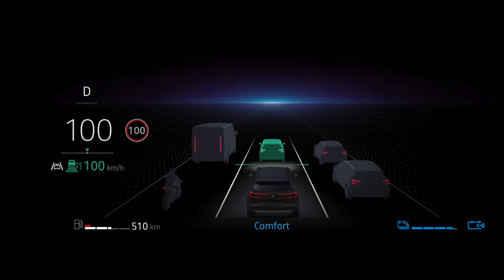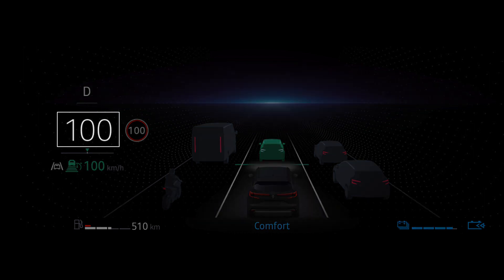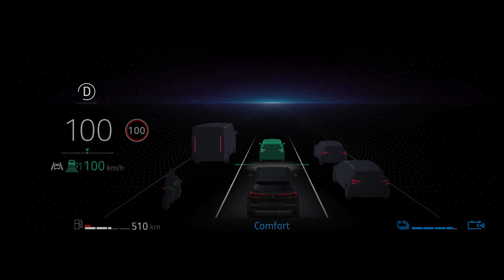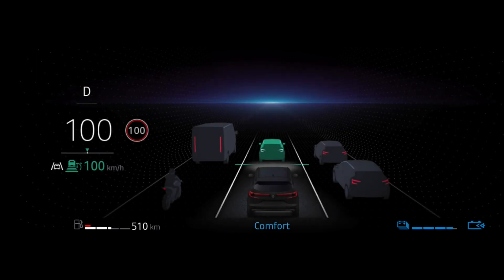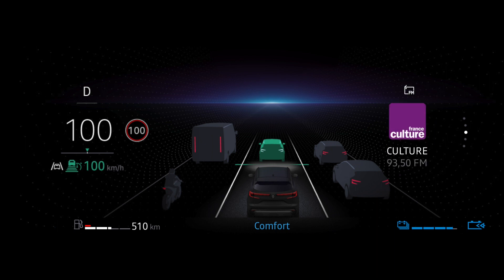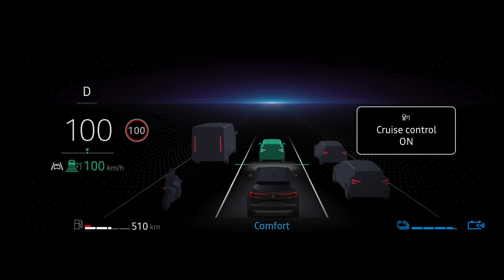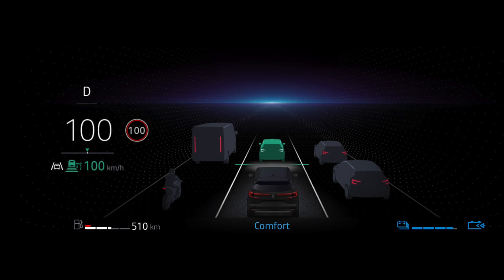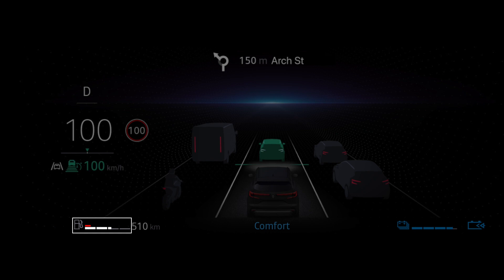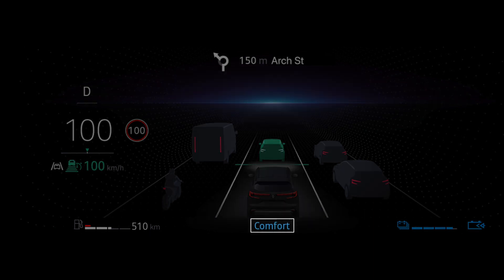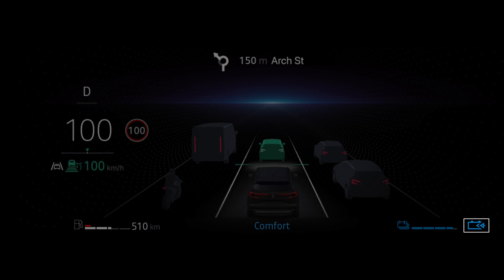The realistic design provides a model view of the surrounding traffic. The speedometer appears on the left with an indication of the gear engaged and information on the driving aids currently in use. The area on the right is used to display your chosen widgets and onboard log messages. You can see instructions for the current navigation at the top of the screen. At the bottom of the screen you can see the fuel level, your forecast range, the current multi-sense mode, your battery charge level, and the current regenerative braking level indicator light.